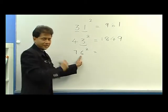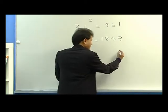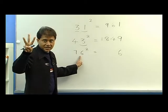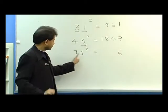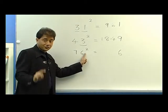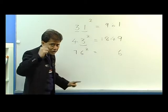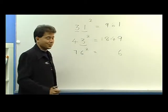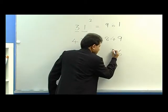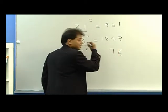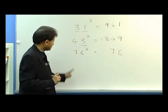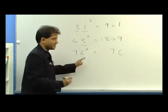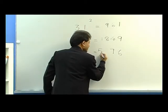And now the last example: 76 squared. 6 squared is 36 — I write 6, remainder 3. Now 7 times 6 is 42, double of 42 is 84, plus the remainder 3 gives 87 — I write 7, remainder 8. 7 squared is 49, plus 8 is 57. And this is your answer.